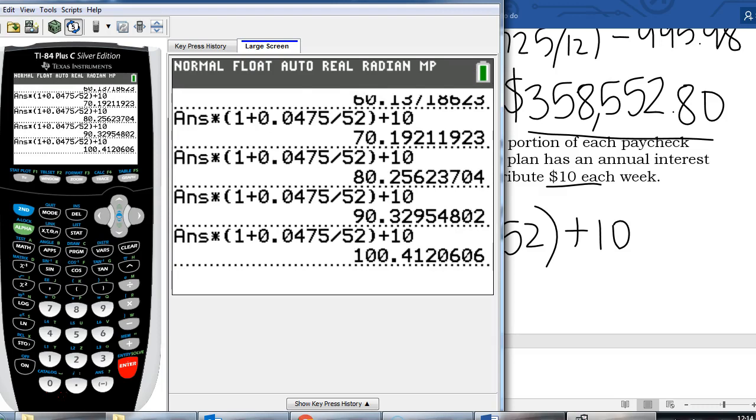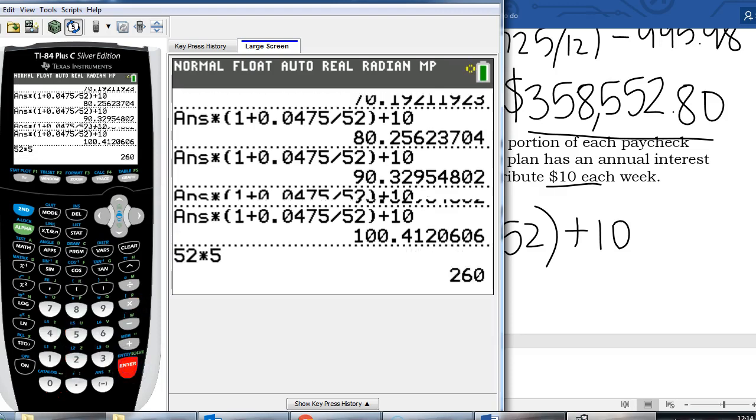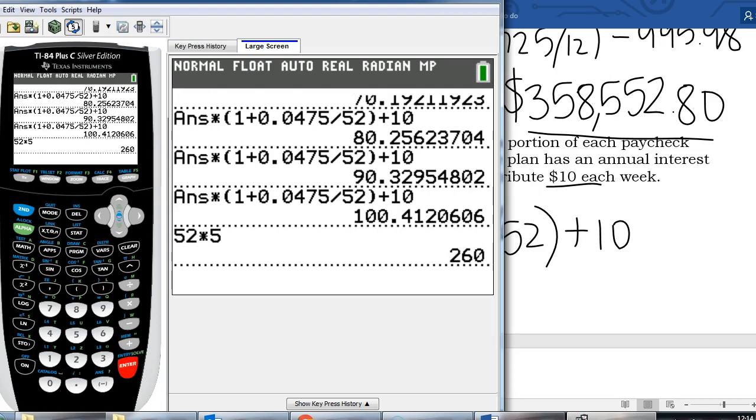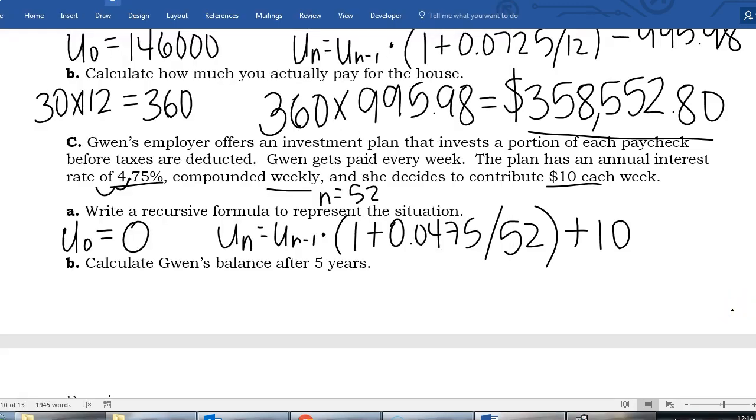And 52 times five, I'd have to enter 260 times to get to my five-year balance. So I'm just going to write that down, u 260. 5 times 52 is 260. And if you have the patience to do that you should.